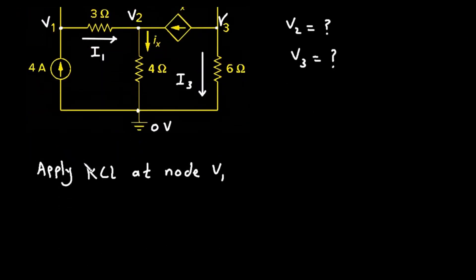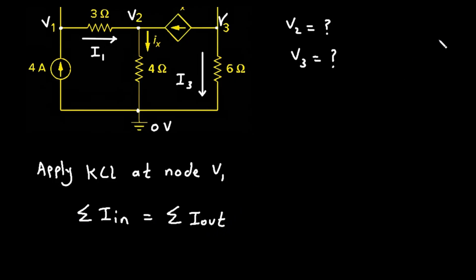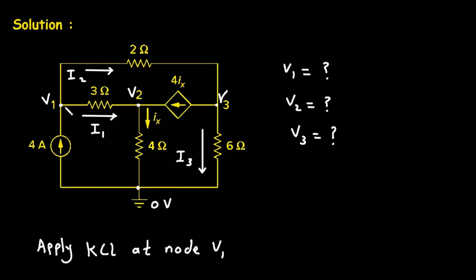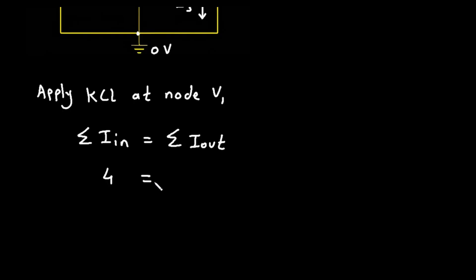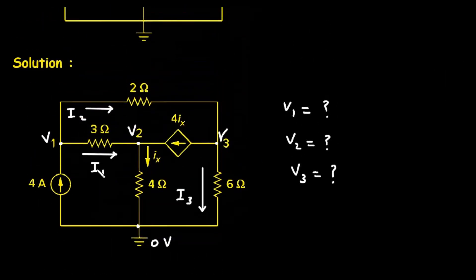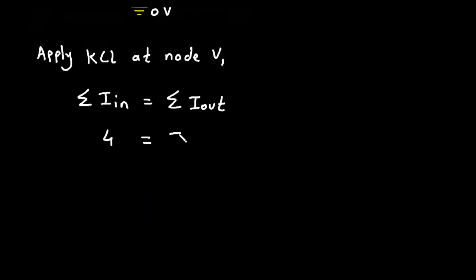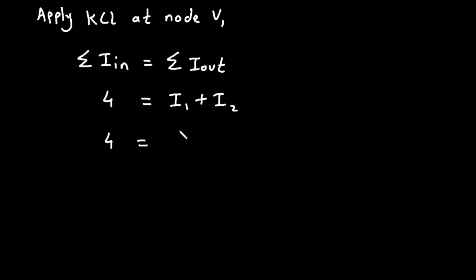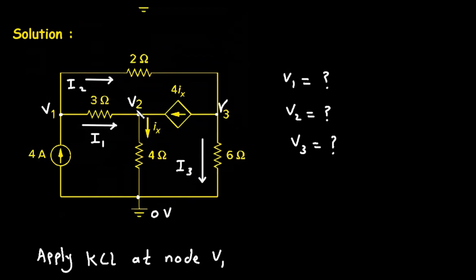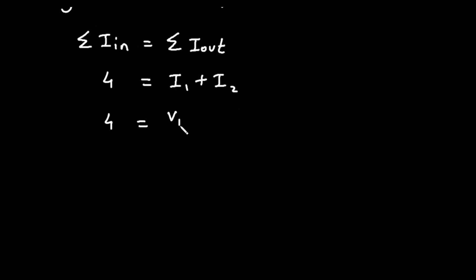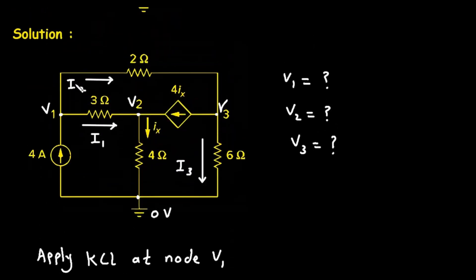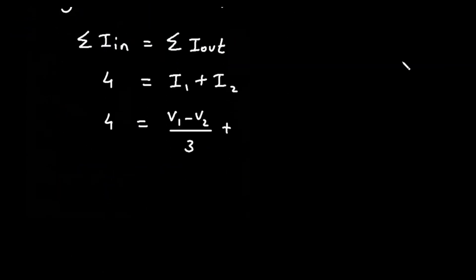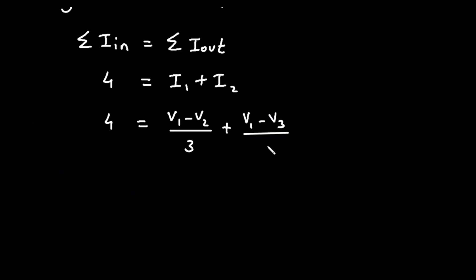According to KCL, that is Kirchhoff's Current Law, the summation of all currents entering a node equals the summation of all currents leaving the node. At this node, the entering current is 4A, so we write: 4 = I1 + I2. This gives us: 4 = (V1 − V2)/3 + (V1 − V3)/2.